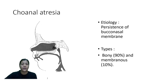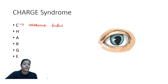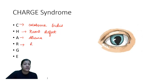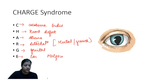Choanal atresia occurs because of persistence of the bucconasal membrane. CHARGE syndrome: C stands for coloboma iridis; H stands for heart defects; A stands for atresia (choanal); R stands for retardation — mental or growth retardation; G is for genital malformations; E is for ear malformations.